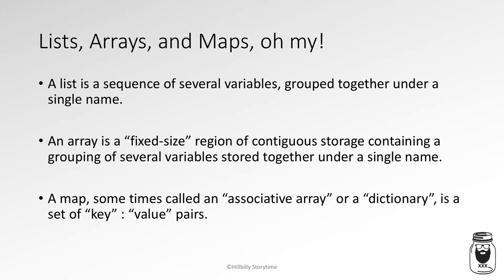Then you have a map, sometimes called an associative array or a dictionary depending on the programming language — in Python it's called a dictionary. It is a set of key-value pairs. For example, if you want to store everybody's age, you could use a list. But with a map, the name would be the key and the value would be the age, so you can determine whose age is which.